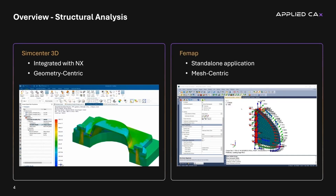Both SimCenter 3D and FEMAP are products of Siemens, each offering impressive simulation capabilities, including finite element analysis. However, they're each designed with a specific approach to the engineering process. The core solver for both tools is SimCenter NASTRAN, an industry standard in linear statics and linear dynamics. Now let's discuss where each of these tools shine, then we'll look closer at some of the key features and discuss the differences.